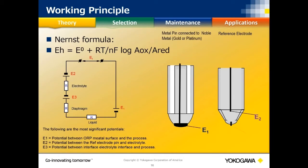In the electrical circuit, since we use the same standard reference electrode, the E2 and E3 voltage from the silver chloride pin in KCl and the junction open to the process — Nernst assigned that combination a zero millivolt potential. So the only voltage measured, E1, is generated by the ORP reaction against the noble metal, normally gold or platinum. If the junction gets plugged, a potential generates there and adds errors to your ORP measurement, just as with pH.